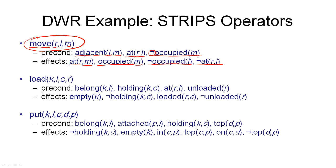There are a few things that are common about this operator, though they are not part of the formal STRIPS definition. All the parameters R, L, and M are mentioned in the preconditions. Also very common is that the negative effects — the delete list — appear as part of the preconditions, only negated. For the second negative effect this is explicit, and for the first it is implicit, since location L was occupied before the robot moved away.